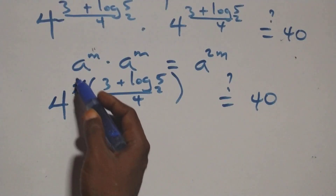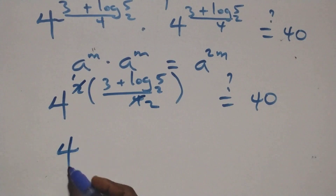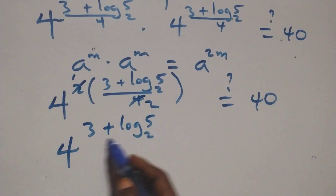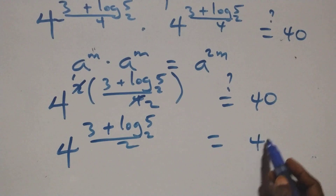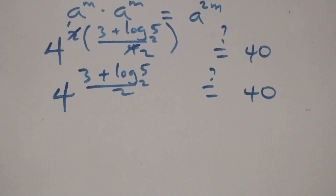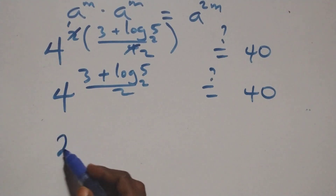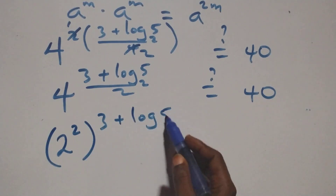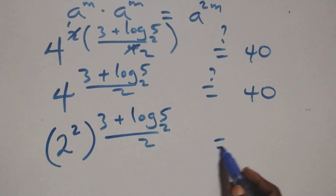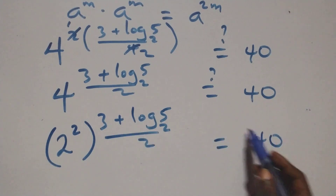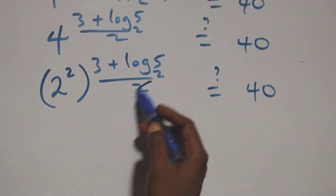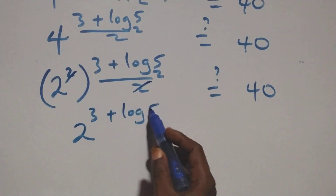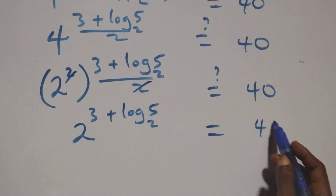The power multiplies: we have 4 raised to power (3 plus log₂5) over 2. Writing 4 as 2 squared gives (2 squared) raised to power (3 plus log₂5) over 2. The power 2 in the exponent and the 2 in the base cancel, leaving 2 raised to power (3 plus log₂5). This equals 40.